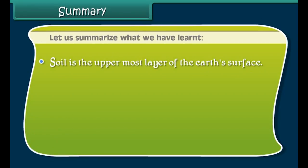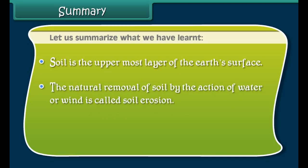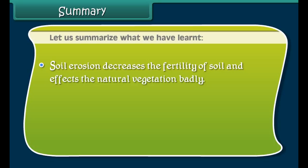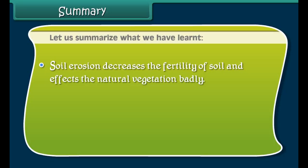Let us summarize what we have learned. Soil is the uppermost layer of the earth's surface. The natural removal of soil by the action of water or wind is called soil erosion. Water and wind movements along with human activities are responsible for soil erosion. Soil erosion decreases the fertility of soil and affects the natural vegetation badly. Growing large number of trees and practicing modern techniques of farming can control soil erosion.